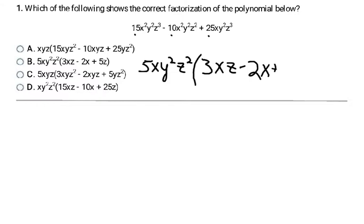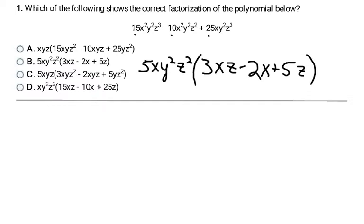For my last term: I have 25 for my coefficient — divide out the 5 and I'm left with plus 5. I have x — I already pulled out an x, so none are left. I have y squared — I moved a y squared out front, so nothing left. I have z cubed — I moved a z squared out, so I have one z left to write by my five. Then I close my parentheses. What's in my parentheses I can't factor anymore, so I'm done. My answer for number one is going to be B.